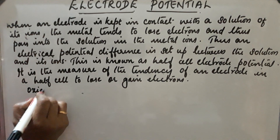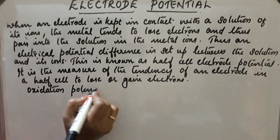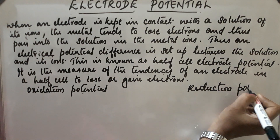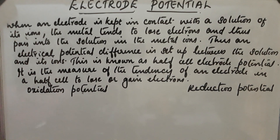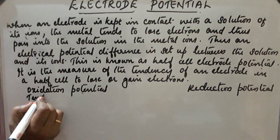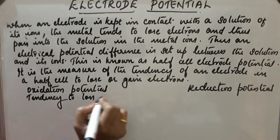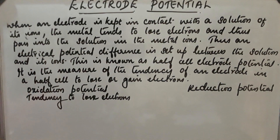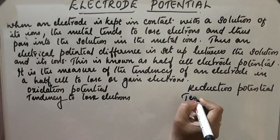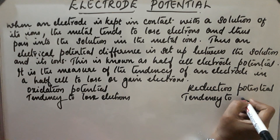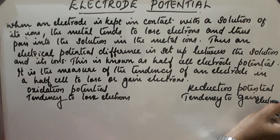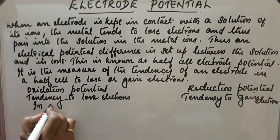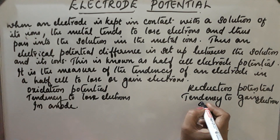So we have oxidation potential and reduction potential. In oxidation potential, the tendency is to lose electrons. In reduction potential, the tendency is to gain electrons. In a Daniel cell, we already discussed that loss of electrons takes place at the anode and gain of electrons at the cathode.